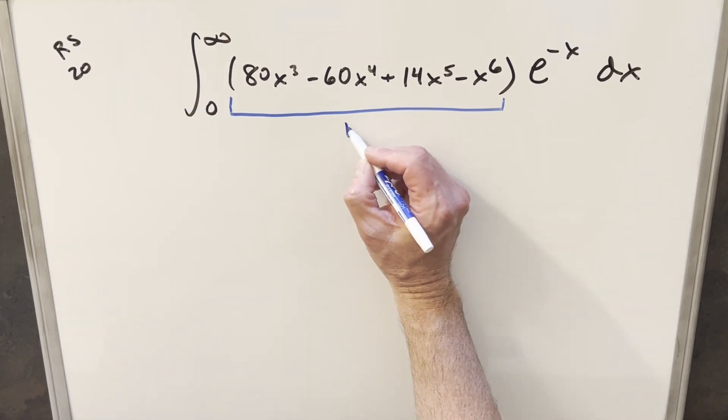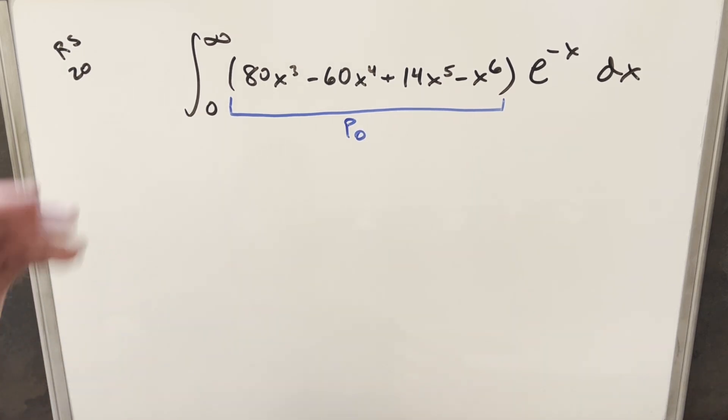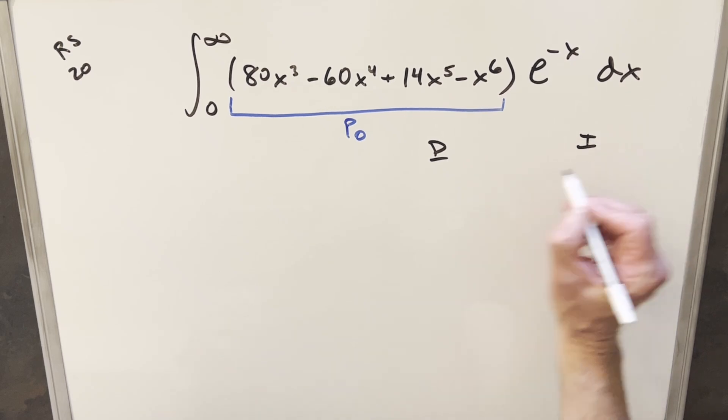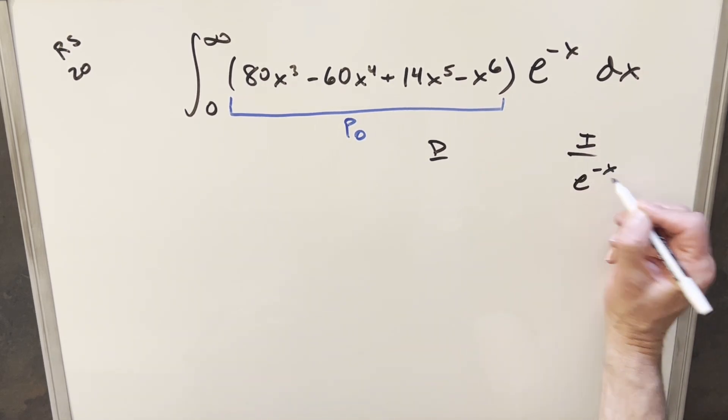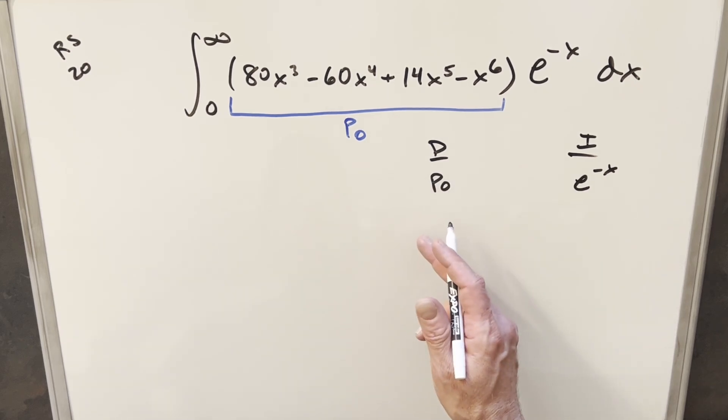I'm going to take this polynomial, I'm just going to label this P₀. And what I want to do is integration by parts. I'm going to use the DI method, tabular integration over here to the right. I'm going to integrate e^(-x) and I'm going to differentiate this polynomial. But notice we're going to have to do integration by parts multiple times in order to get some simplification.